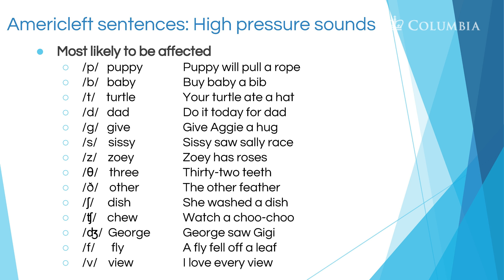For z: 'Zoe' — 'Zoe has roses.' For th (voiceless): 'three' — 'Thirty-two teeth.' For th (voiced): 'other' — 'The other feather.' For sh: 'dish' — 'She washed a dish.' For ch: the single sound is 'ch' — 'chew' — 'Watch a choo choo.' For j: 'George' — 'George saw Gigi.' For f: 'fly' — 'A fly fell off a leaf.' For v: 'view' — 'I love every view.'